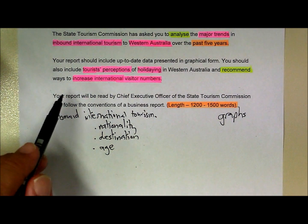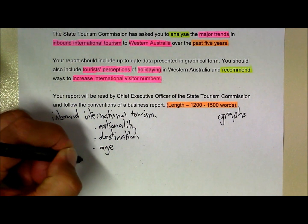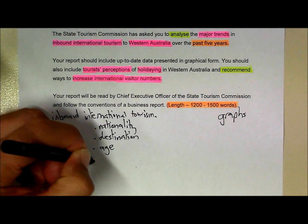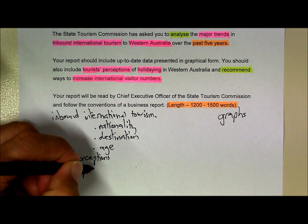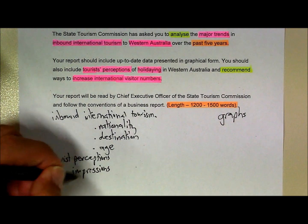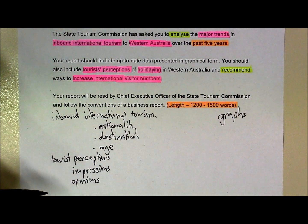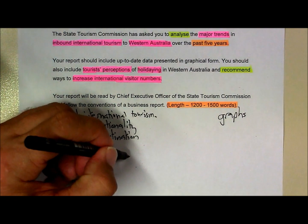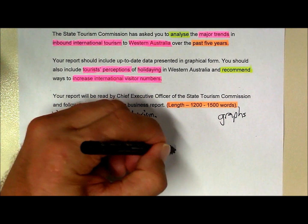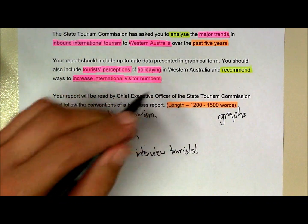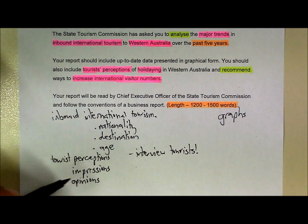From there, I'm looking at tourist perceptions — that's interesting. What are some synonyms for tourist perceptions? I might do some searches looking at things like tourist impressions or tourist opinions. While I might be able to find some information on the Library One search, I might also try interviewing some tourists to find out a little bit more about what their impressions are. That's probably going to be the source of most of my data.